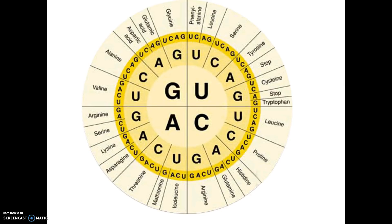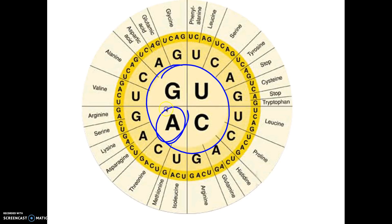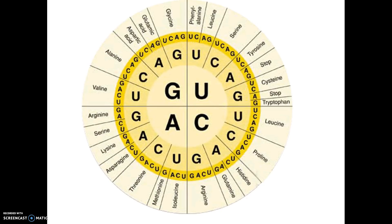This is another version of the codon chart that you read starting from the inside out. If the code was AUG, you'd find A in the middle to get your quadrant, then find U within that quadrant, and there's AUG. It's a cute chart, but it's not usually the one seen on an AP exam.